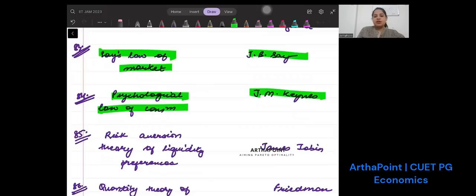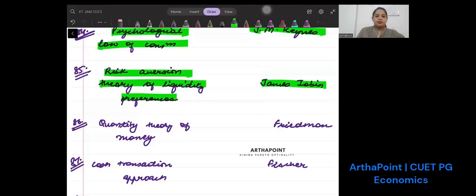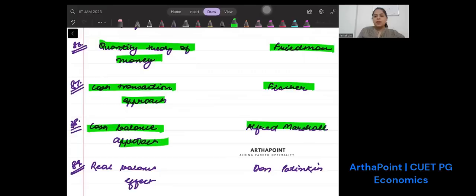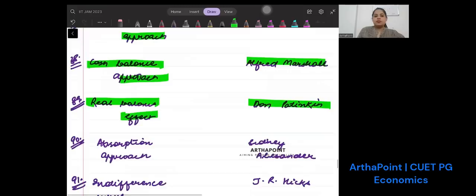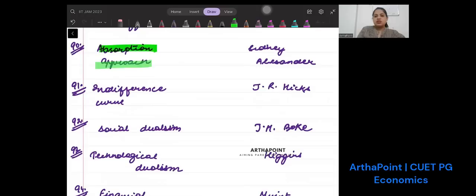Say's law of markets is given by J.B. Say. Psychological law of consumption is given by J.M. Keynes. Risk aversion theory of liquidity preference is given by James Tobin. Quantity theory of money is given by Friedman. Cash transaction approach is given by Fisher. Cash balance approach is given by Marshall. Real balance effect is given by Patinkin. These four can come in match the following.